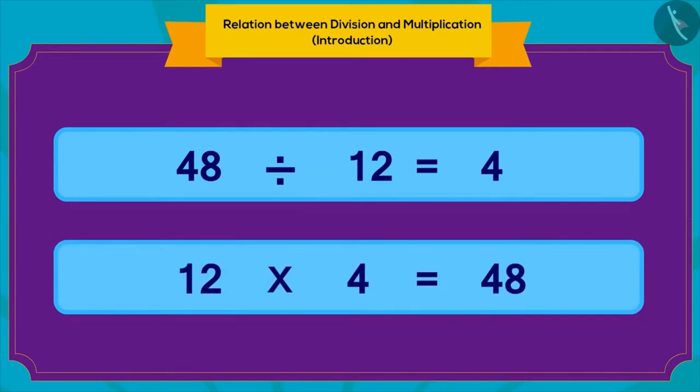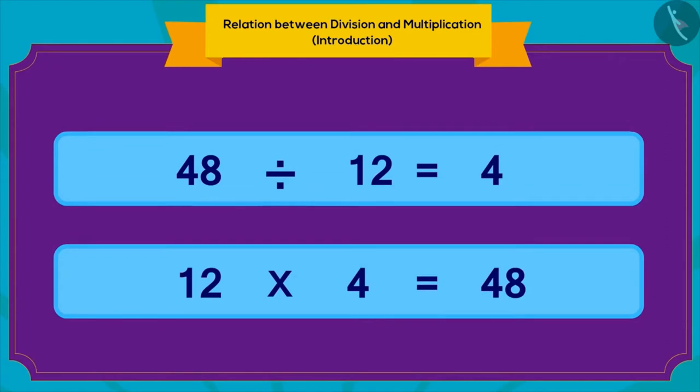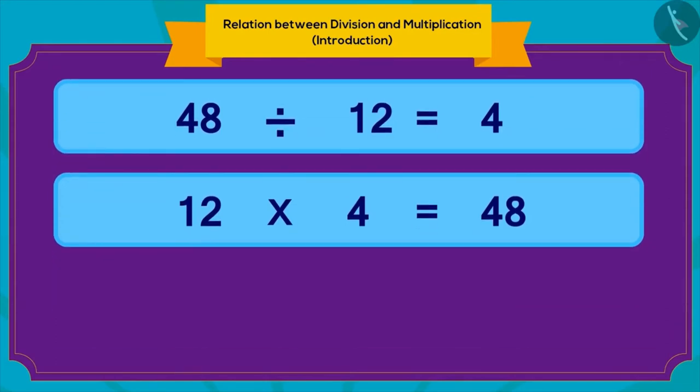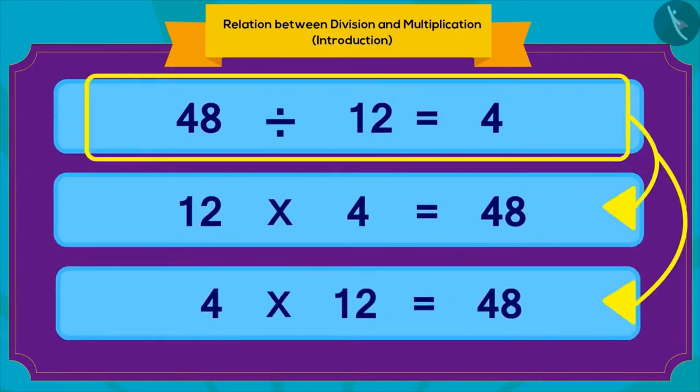If there are 12 people and each person gets 4 kg of kheer, then total quantity of kheer is 48 kg. 12 multiplied by 4 is 48. We can write this multiplication in one more way. If every person gets 4 kg kheer, and there are 12 people who get kheer, then total quantity of kheer is 4 multiplied by 12, which is 48 kg. We can write any division in two ways in terms of multiplication.